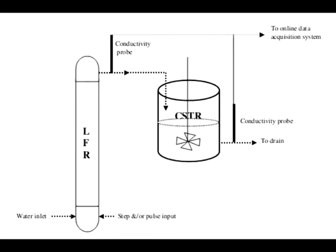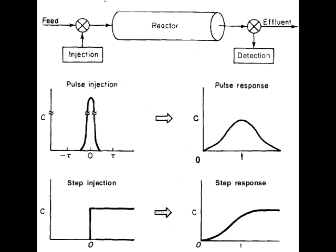We determine the residence time distribution experimentally and we have two methods. First, we take some tracer molecules or tracer atoms, inject them instantaneously at a fixed volume, and determine the concentration at the exit. This is the pulse experiment. The second experiment is the step experiment, where we inject a predetermined amount of reactants over a limited amount of time and find out the concentration of the reactants at the exit.